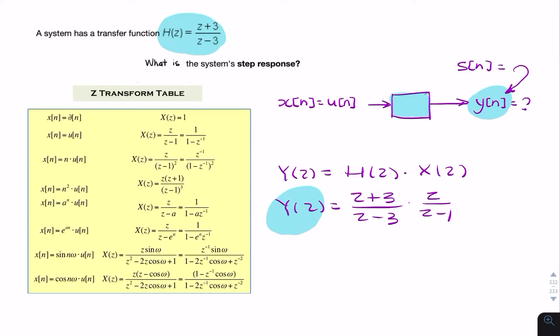But it's in the z domain, and we want y of n. We need to look this up in the z transform table. There's nothing here that looks remotely like this, so we're going to have to use partial fractions to split this up.